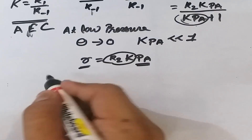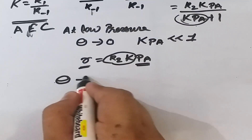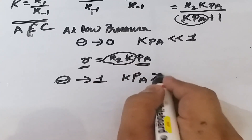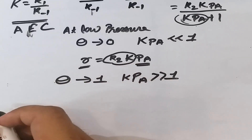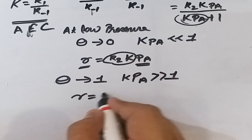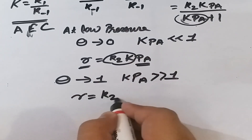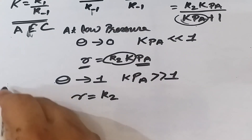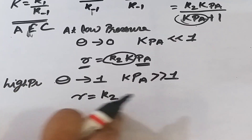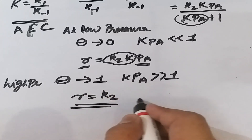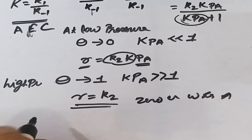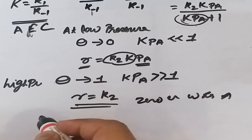At high pressure, θ ≈ 1 and Kpₐ >> 1, so we can omit the 1 in the denominator. Then Kpₐ cancels and r ≈ k₂. The reaction is therefore zero order with respect to the concentration of A at high pressure.